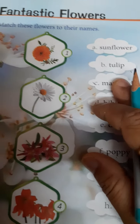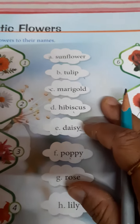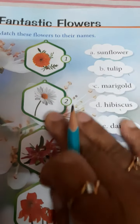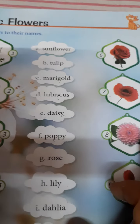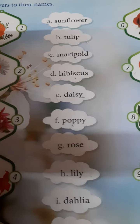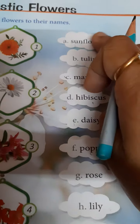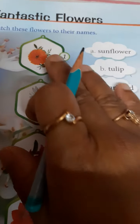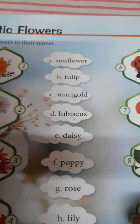We all know there are so many beautiful flowers around us. In your book you can see pictures of some beautiful flowers on the left side and the right side, and in the middle the names of those flowers are given. You have to match these flowers to their names. So children, let's start.